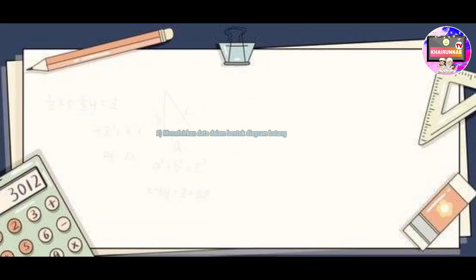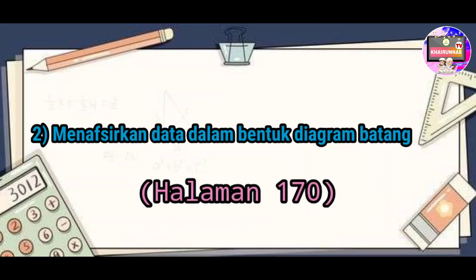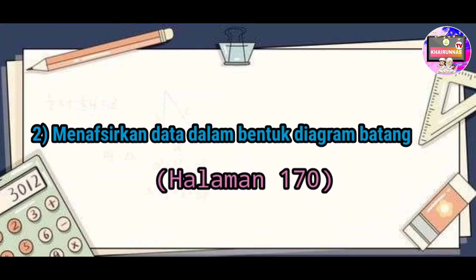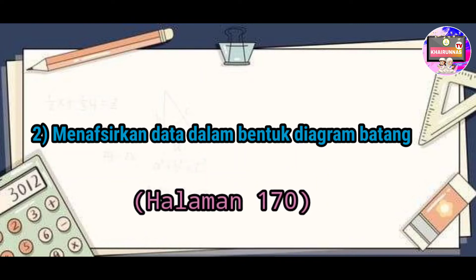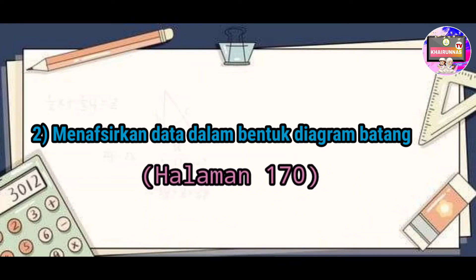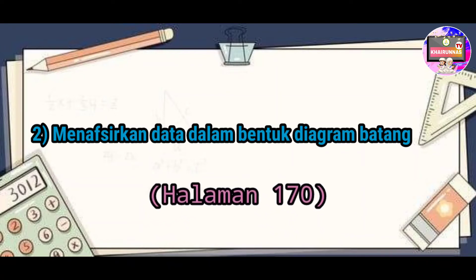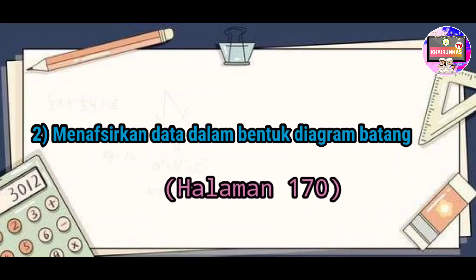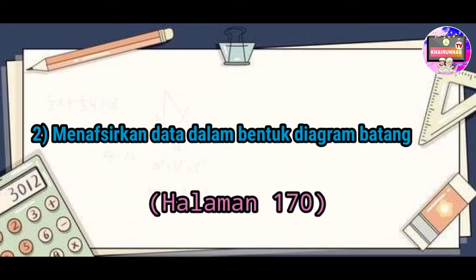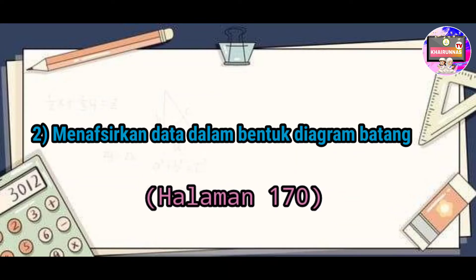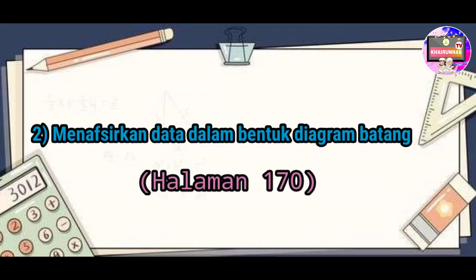Selanjutnya, dua: menafsirkan data dalam bentuk diagram batang. Diagram batang terdiri dari garis horizontal dan garis vertikal, serta batang-batang yang memiliki tinggi yang berbeda-beda. Pada diagram batang, banyak data diwakili oleh gambar persegi panjang. Berikut ini kita akan menafsirkan data dalam bentuk diagram batang.